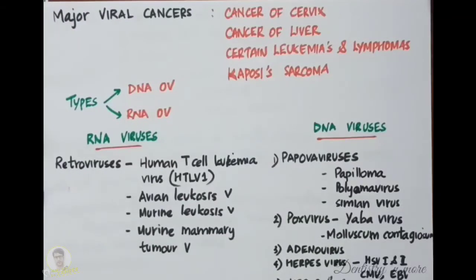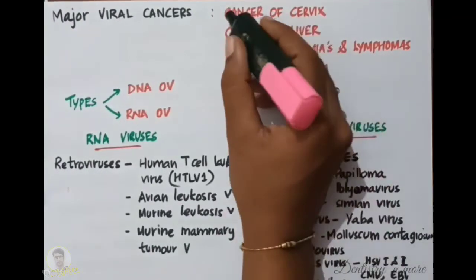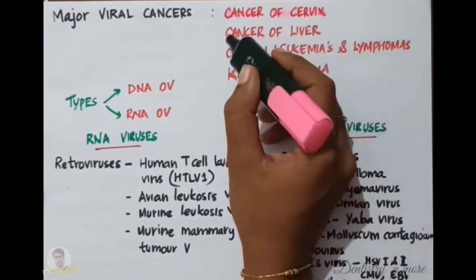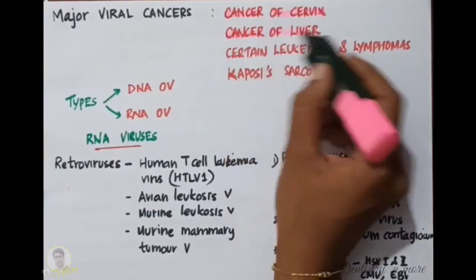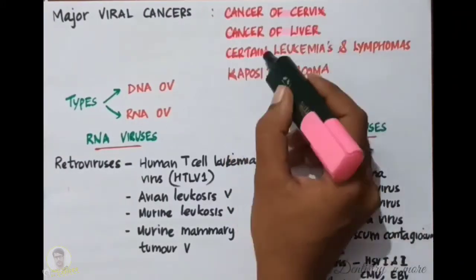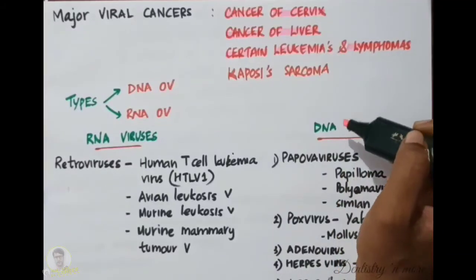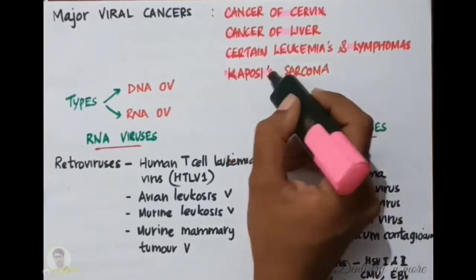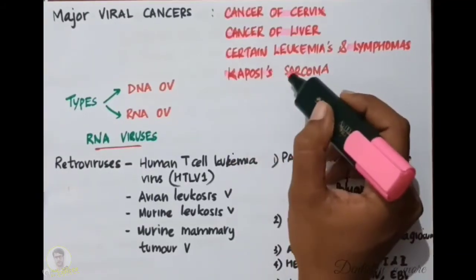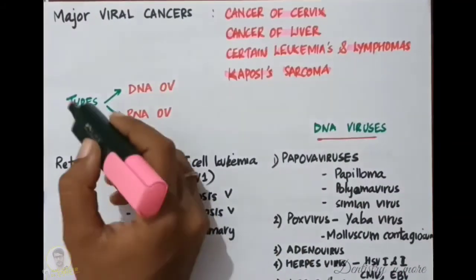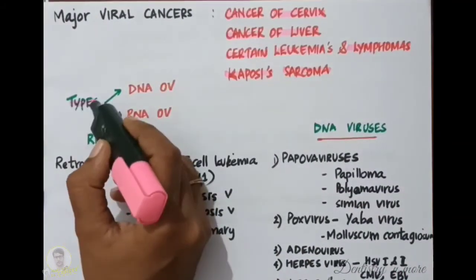The major viral cancers include cancer of the cervix, cancer of the liver, certain leukemias and lymphomas such as Burkitt's lymphoma, and Kaposi's sarcoma.